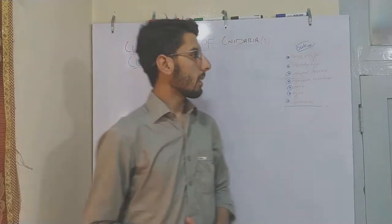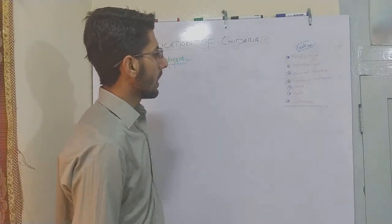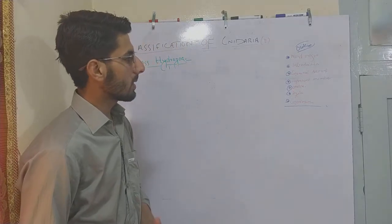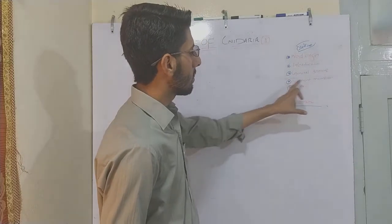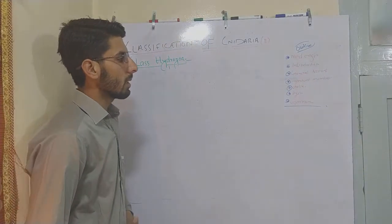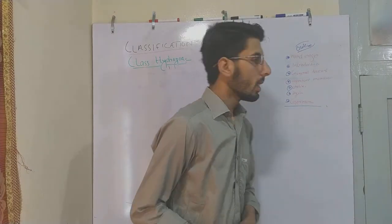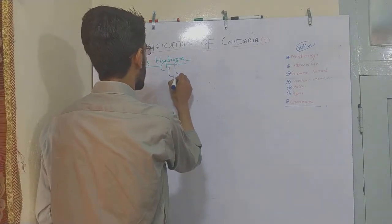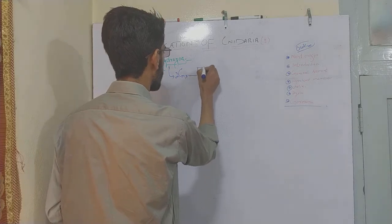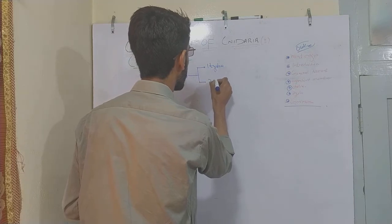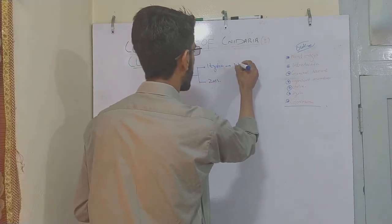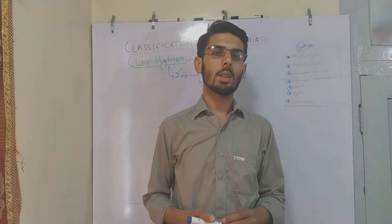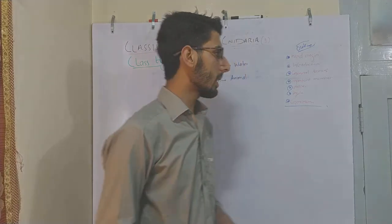We will now discuss Class Hydrozoa in detail. The outline covers: word origin and introduction, general characteristics that distinguish it from other classes, and then important members including Obelia geniculata and Hydra. Regarding word origin: Hydrozoa is derived from two Greek words — 'hydra,' meaning water, and 'zoeus,' meaning animal.